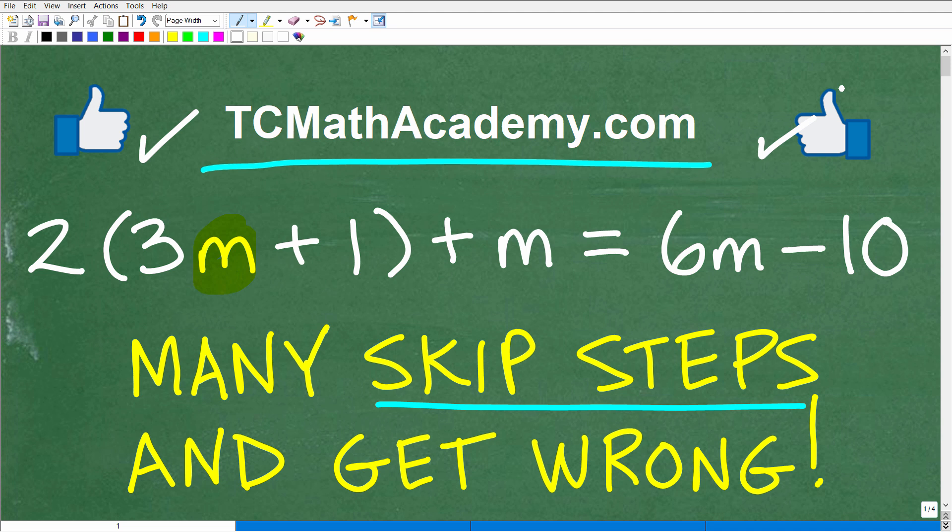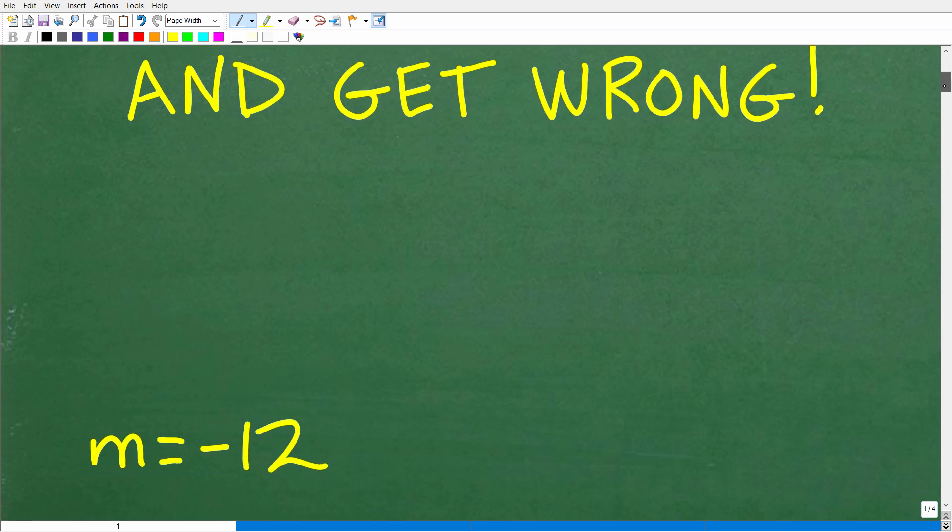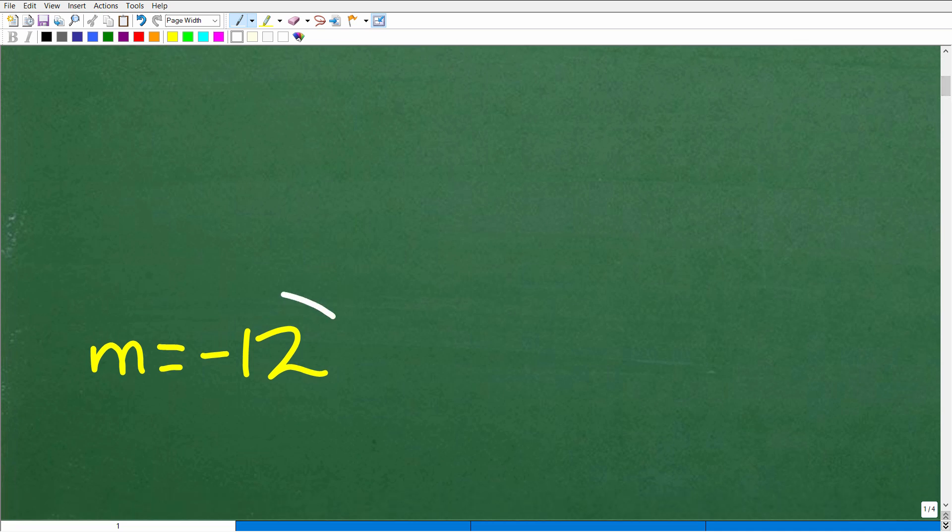Okay, so for those of you that need some more work to work on this problem, maybe you want to pause the video for just one quick second, work on this, get your solution. But let's go ahead and take a look at the answer right now. We're trying to figure out what m is equal to, and m is equal to negative 12.